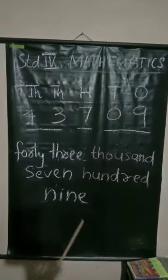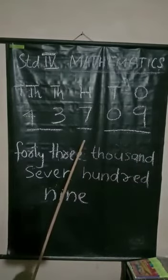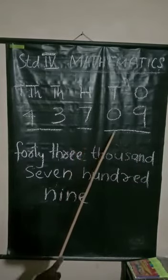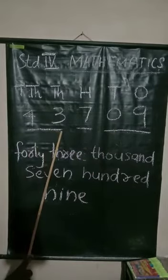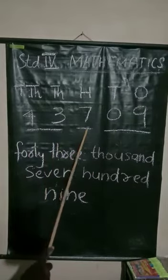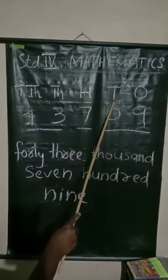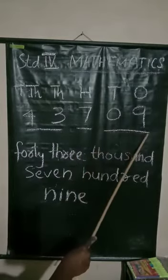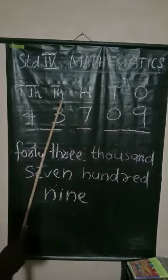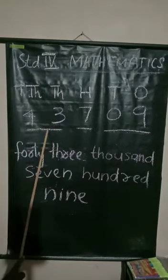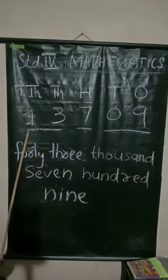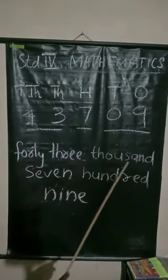Let us take another number. I break it into three groups: thousands and ten-thousands in a group, hundreds in a group, and tens and ones in a group. First, read ten-thousands and thousands together. How many thousands are there? Forty-three thousand.